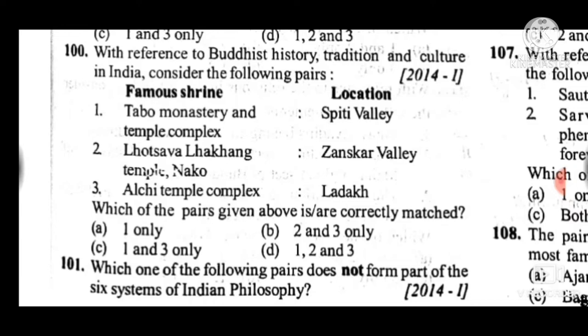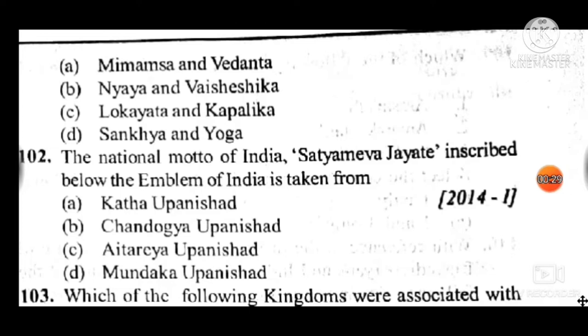Question 101: Which one of the following pairs does not form part of the six systems of Indian philosophy? Answer is C, Lokayata and Kapilika — Lokayata is not part of the six systems of philosophy. Question 102: The national motto of India 'Satyameva Jayate', inscribed below the emblem of India, is taken from — answer is D, Mundaka Upanishad.